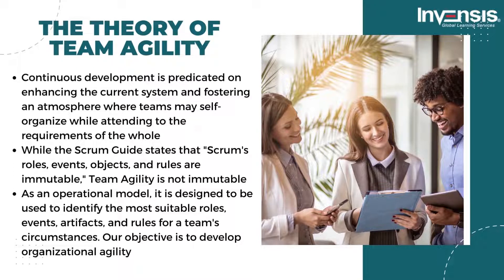While the Scrum Guide states that Scrum's roles, events, objects, and rules are immutable, team agility is not immutable. As an operational model, it is designed to identify the most suitable roles, events, artifacts, and rules for a team's circumstances. Our objective is to develop organizational agility, not strive for team-level local optimization. Considering the complete system increases efficiency, and we want self-organization within the framework of the development team's value stream.